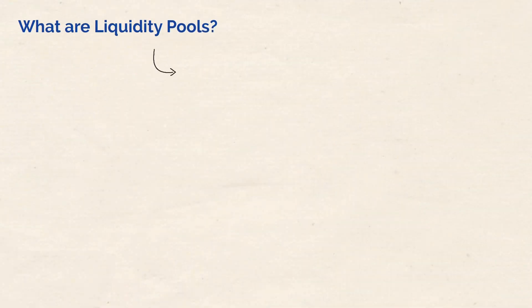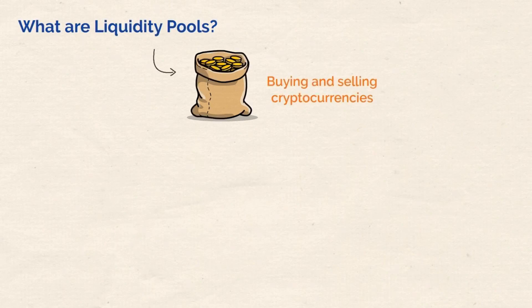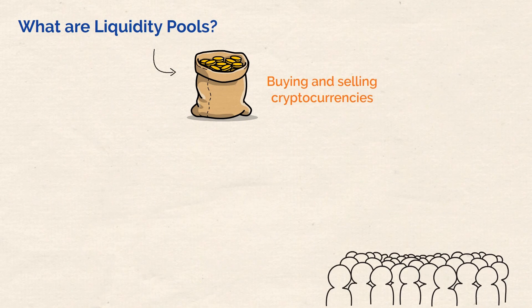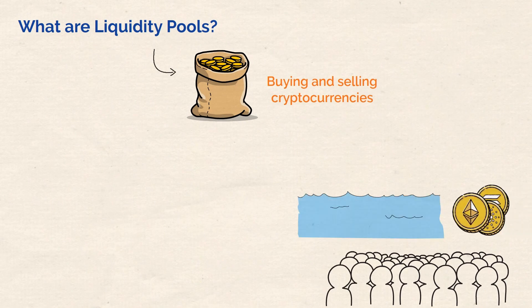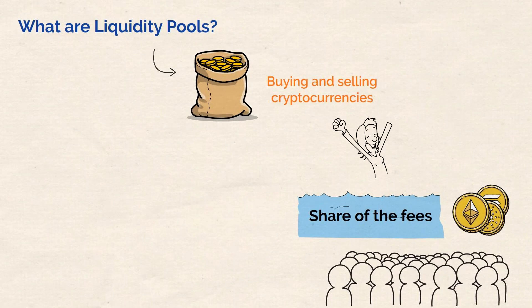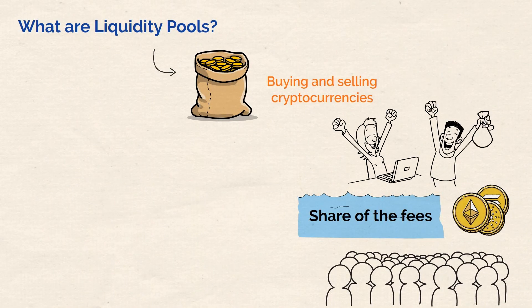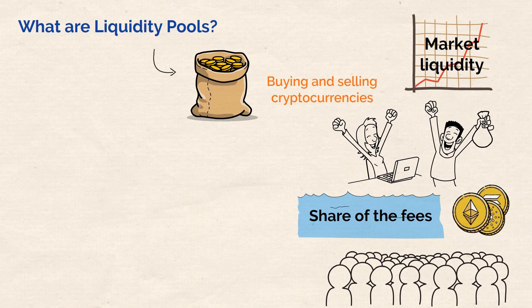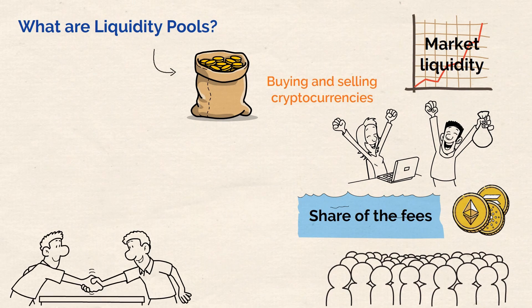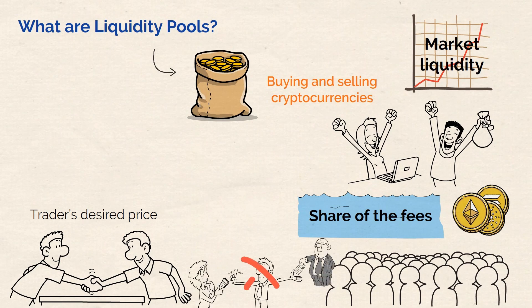In cryptocurrency, a liquidity pool refers to a collection of funds allocated for buying and selling cryptocurrencies on a decentralized exchange. Multiple individuals can contribute cryptocurrency to the pool and receive a share of the fees generated by transactions. The liquidity pool guarantees the availability of buyers and sellers for a specific cryptocurrency on the exchange, which in the end enhances market liquidity. Liquidity pools ensure that buy and sell orders are executed at any time and at a trader's desired price without needing a direct counterparty. The availability of a seller is not required to buy a token as long as there is sufficient liquidity in the pool.